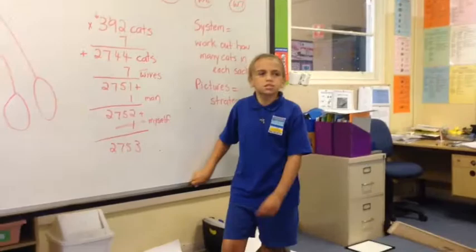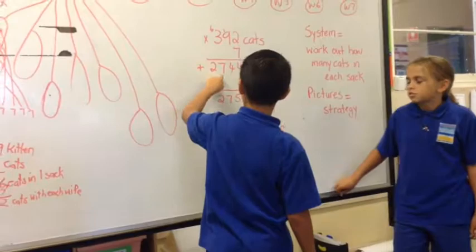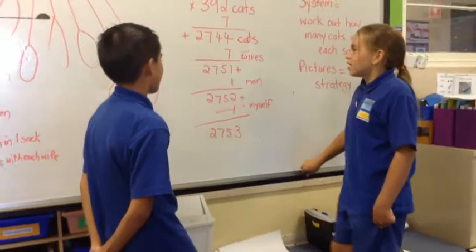And we had 392 cats times seven, which had a total of 2744 cats, but then we had to plus seven wives, which was 2751.